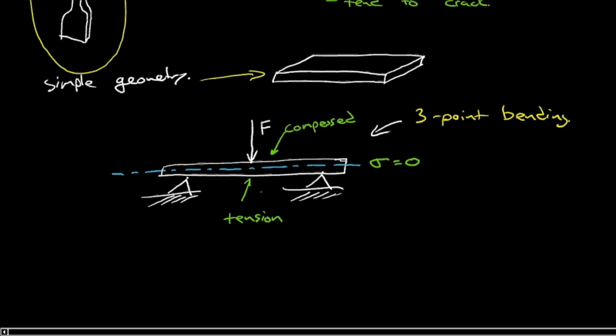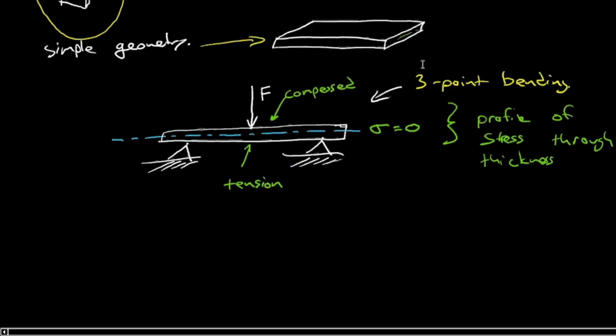If the top is in compression, the lower surface is in tension—completely opposite, positive and negative—so it has to cross through zero in the middle. We have a profile of stress through the thickness. So we can't just take some arbitrary cross-sectional area and divide force by that area. We have to solve for the stress that's causing failure.